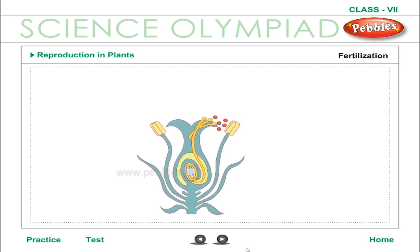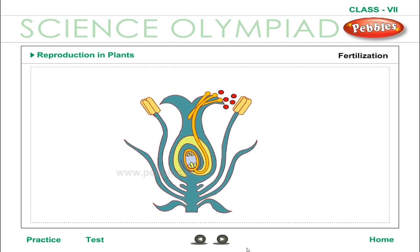Fertilisation: After successful pollination, the stigma secretes nutrients if pollen has landed on the correct stigma of the correct plant. The pollen grains absorb these nutrients and start growing. The pollen tube keeps growing until it reaches the ovule inside the ovary and enters it. The male cell is carried inside the pollen tube. Once the pollen tube reaches the ovule, the male cell is released and fuses with the female gamete (egg) present there. Fertilisation takes place and a zygote is formed.